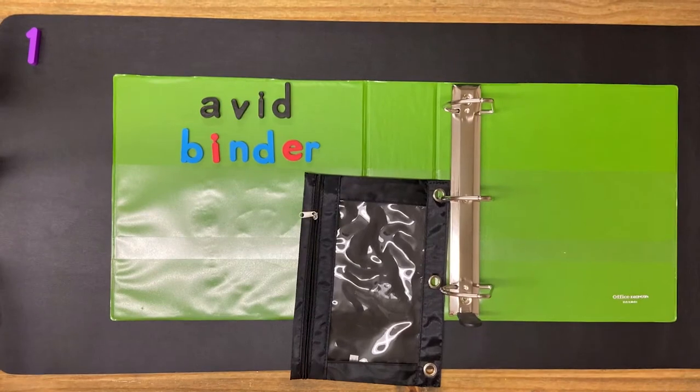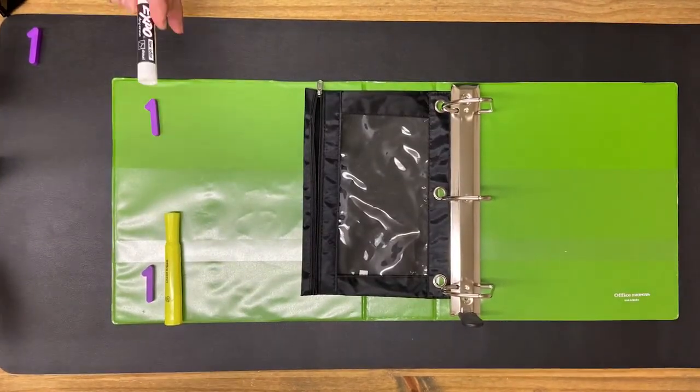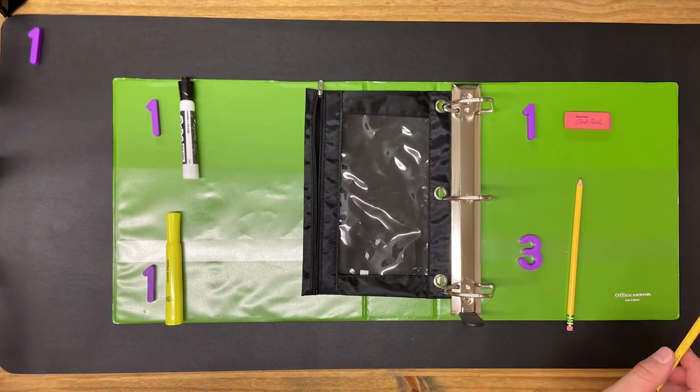Step one, get your pencil pouch full of the following items: one highlighter, one expo marker, one eraser, and three sharpened pencils.